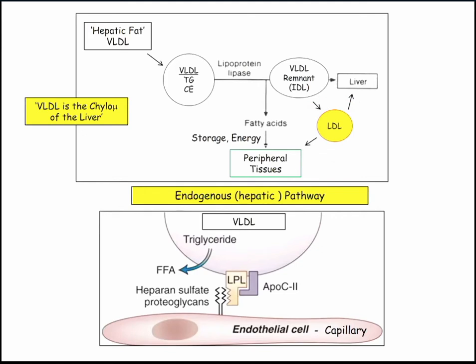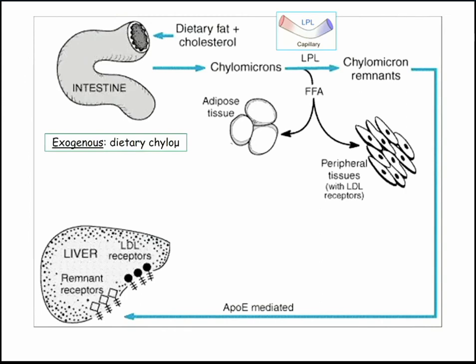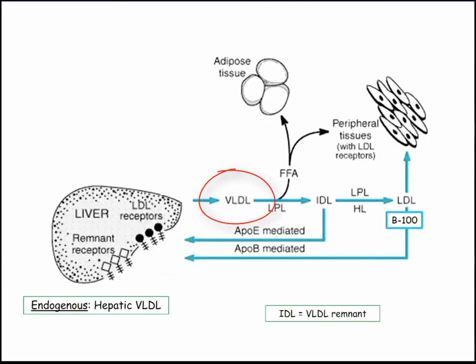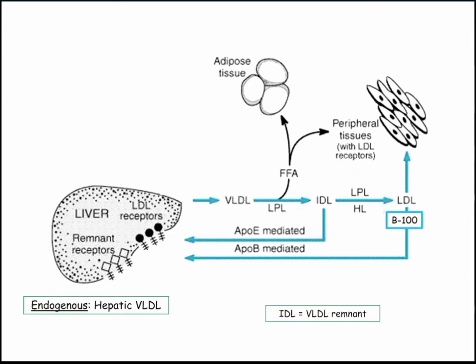VLDL is also metabolized similarly for storage and energy. Here's another rendition with apoproteins. Exogenous is dietary chylomicrons processed by lipoprotein lipase in adipose and muscle, with remnants taken back up by liver receptors. Endogenous: the liver makes VLDL, lipoprotein lipase acts on it to produce IDL — the VLDL remnant — then more lipoprotein lipase and hormone-sensitive lipase metabolize it to LDL, which travels with its ApoB receptor to the periphery or is taken up by liver receptors.